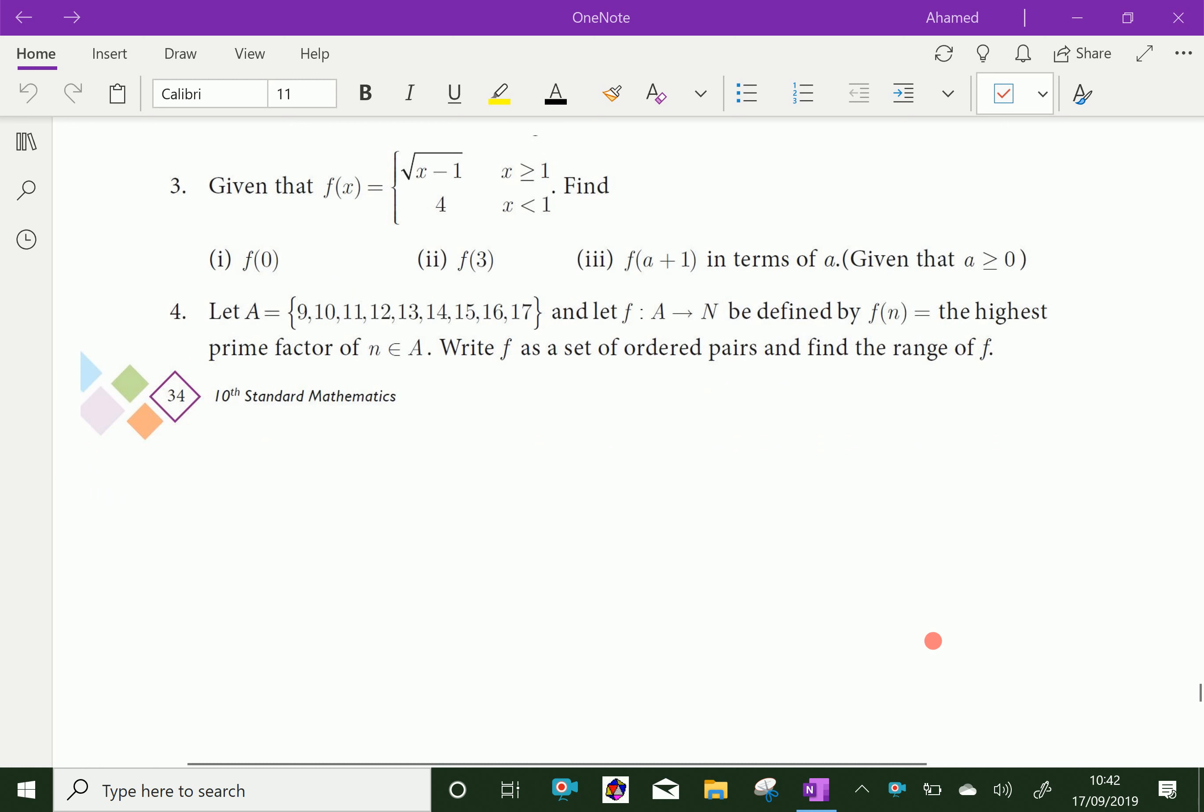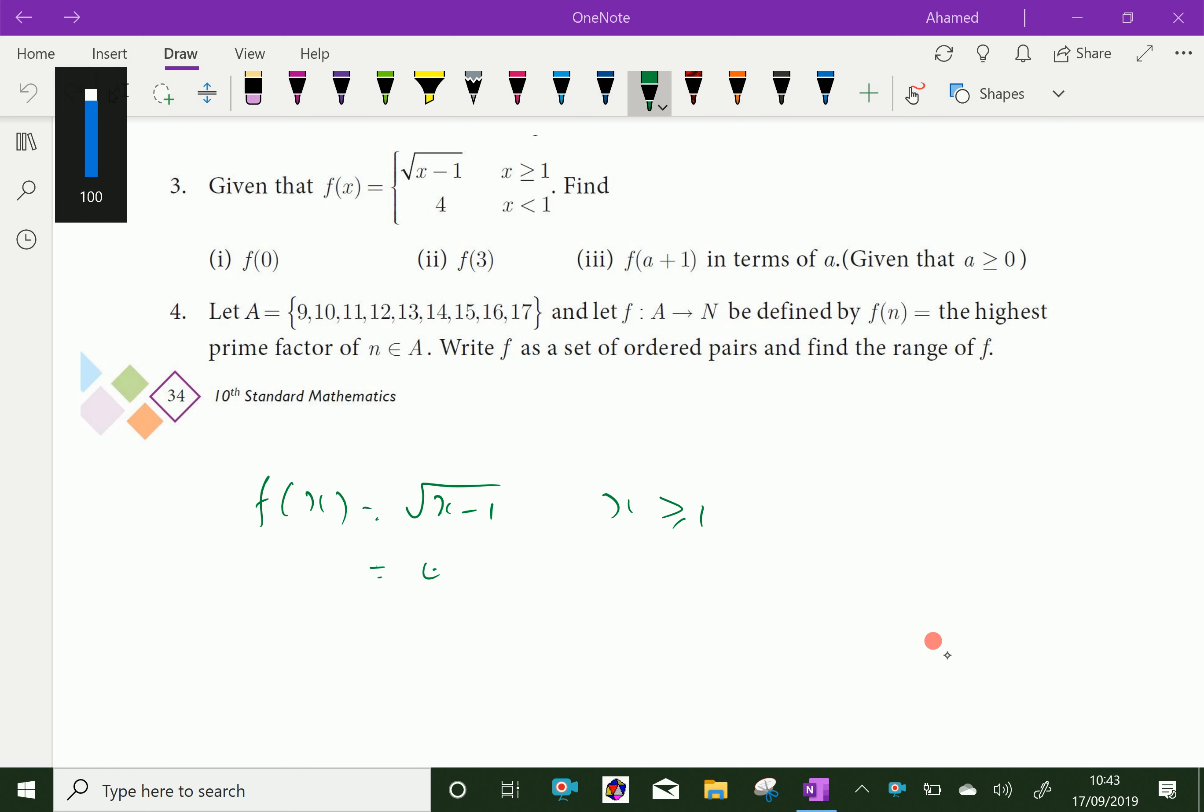Now first let us write the function: f of x equal square root of x minus 1 when x is greater or equal to 1, and equal to 4 when x is less than 1.